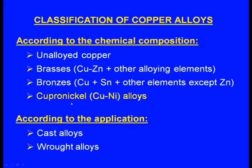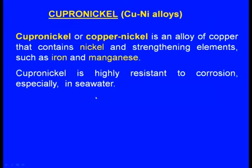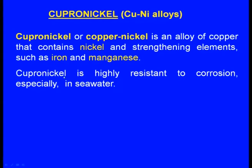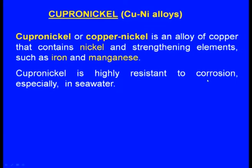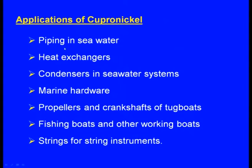Finally, we will come to cupronickel (CuNi). Cupronickel or copper-nickel is an alloy of copper that contains nickel and strengthening elements such as iron and manganese. Cupronickel is highly resistant to corrosion, especially in seawater. Applications include piping in seawater, heat exchangers, condensers in seawater systems, marine hardware, propellers and crankshafts of tugboats, fishing boats and other working boats, and strings for stringed instruments.